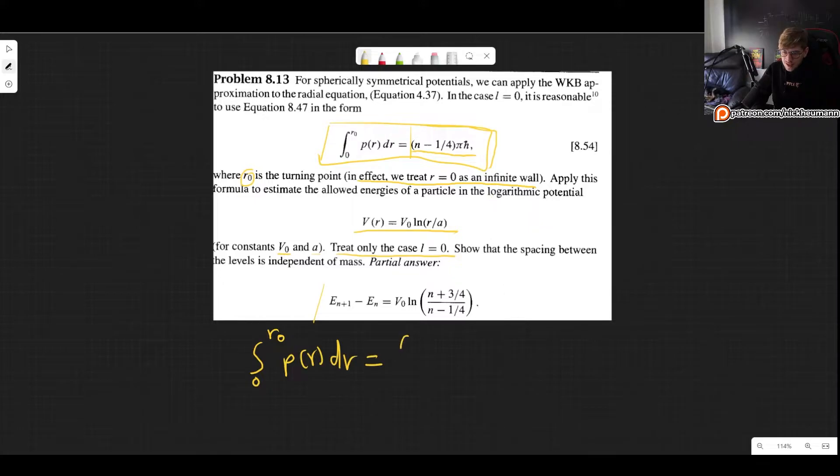So what is the momentum here? The momentum as usual is the square root of 2m E minus the potential. But what is the potential? It is V0 natural log of R over A. And as usual we need to get rid of this E somehow.